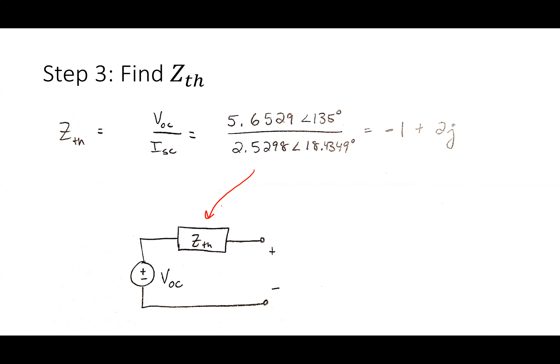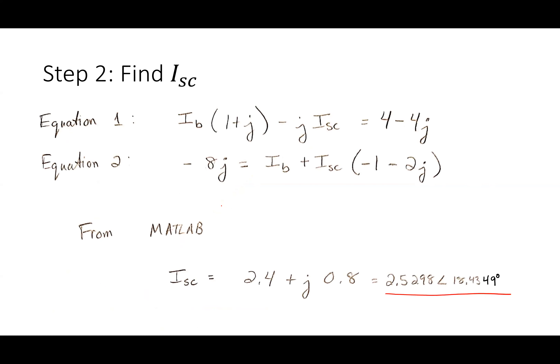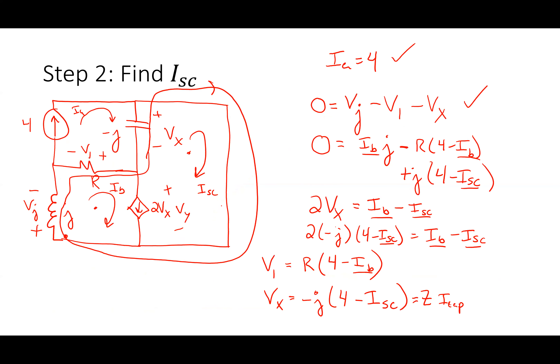To clarify: for the super mesh, I have a current source shared between two meshes. I say the current source value — which is 2Vx — must equal the current flowing with the arrow minus the current flowing against it. That's the constraint equation for the super mesh.